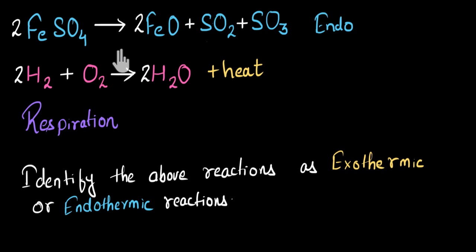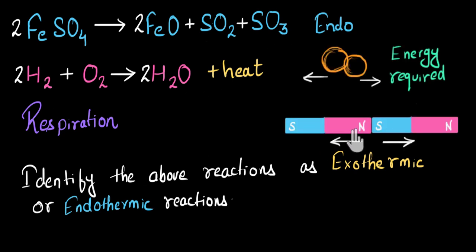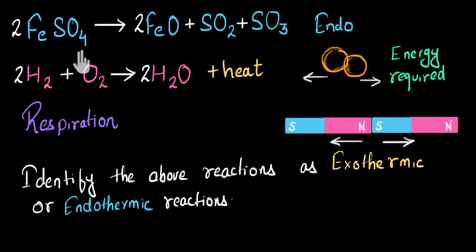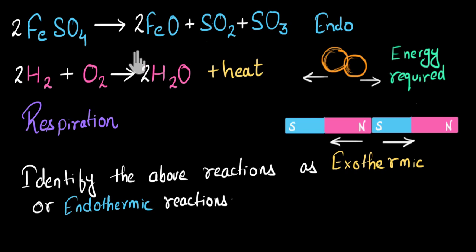To remember that decomposition reactions are generally endothermic, I use the magnet analogy. When two magnets are stuck and I have to pull them apart, I need to provide energy. Similarly, when atoms are stuck in a molecule and I want to separate them, I need to provide energy — and that's what happens in decomposition. There is a big molecule and I want to pull apart some atoms to get multiple products, so I have to supply more energy, and that's why it's endothermic. Note that in reality many more things are happening, but this is a good memory aid to remember that decomposition reactions are generally endothermic.